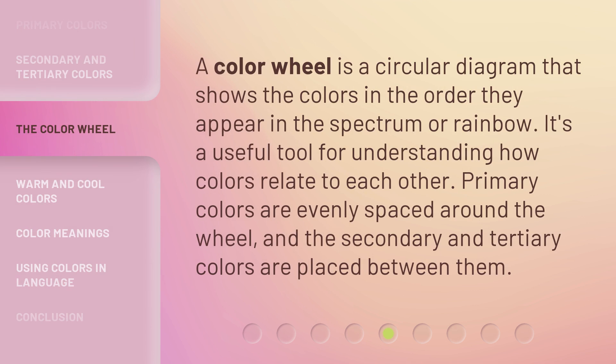A color wheel is a circular diagram that shows the colors in the order they appear in the spectrum, or rainbow. It's a useful tool for understanding how colors relate to each other. Primary colors are evenly spaced around the wheel, and the secondary and tertiary colors are placed between them.